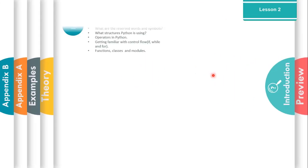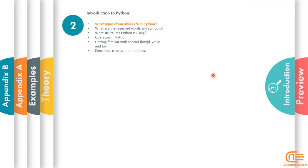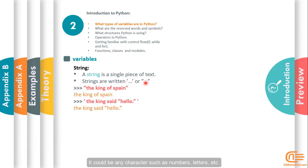Hello and welcome to Abaqus scripting package. In this lesson 2, we want to learn the basics of the Python programming language. First, we should know what types of variables are used mostly in Python. Strings. Anything that is defined by a single quotation or double quotation is a string. It could be any character such as numbers, letters, or any other ones. For example, "the king of Spain" is surrounded by double quotations, so it is a string. If you want to make a double quotation string, we should use single quotation as here.